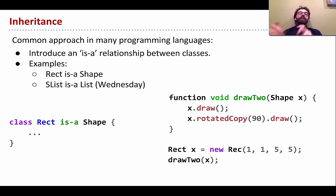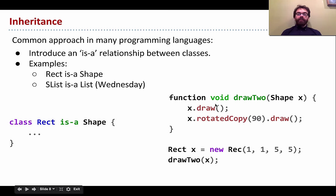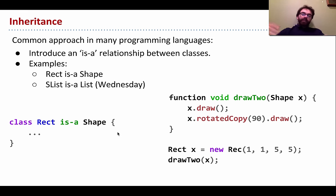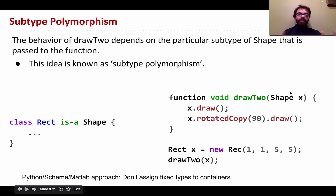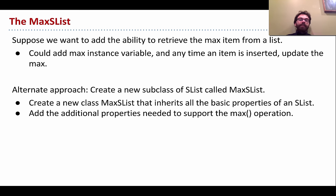The big idea of inheritance is introducing an 'is-a' relationship between classes. We want to say 'rect is a Shape.' Once we've done that, we can write a drawTo method with a static type that guarantees a draw method exists, without knowing the exact shape type. The actual behavior of draw depends on the dynamic type — this is subtype polymorphism.